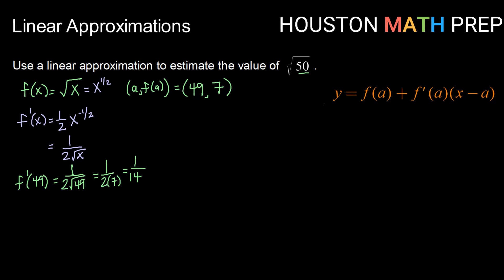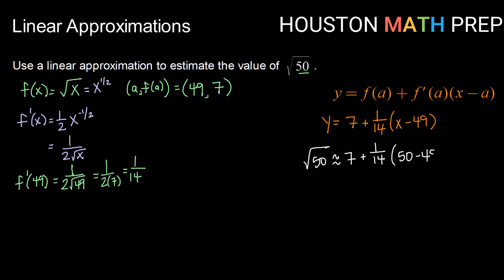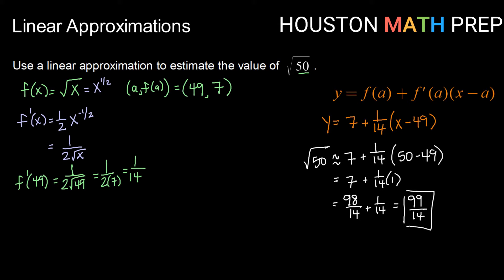Now we've got everything we need. Let's create the tangent line approximation: y = f(a) + f'(a) · (x − a), which gives us y = 7 + (1/14)(x − 49). Using this to approximate √50, we plug in x = 50: √50 ≈ 7 + (1/14)(50 − 49) = 7 + (1/14)(1). Getting a common denominator, 7 = 98/14, so we get 98/14 + 1/14 = 99/14.